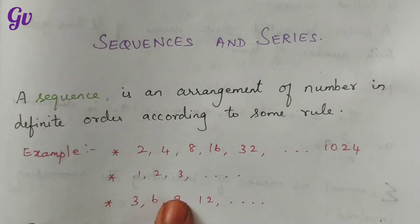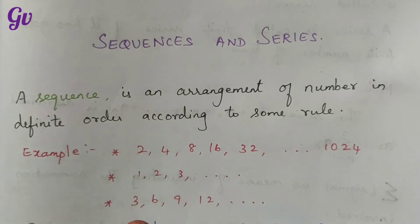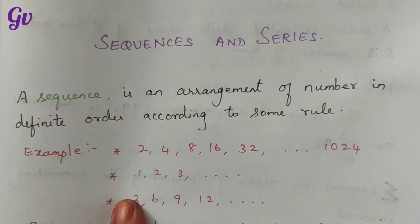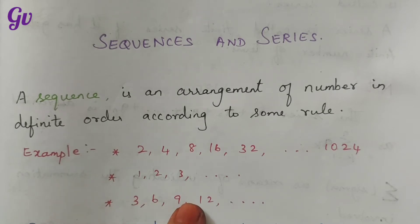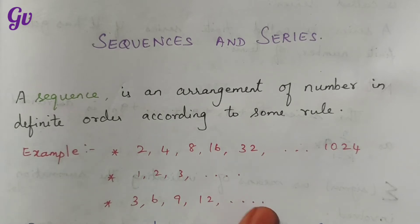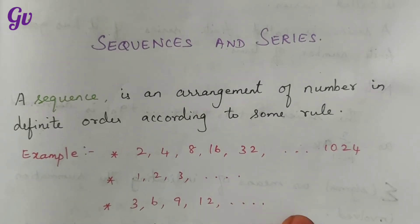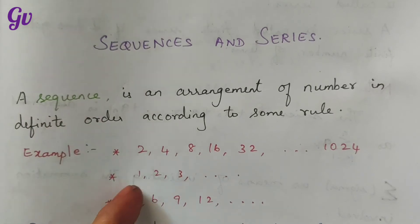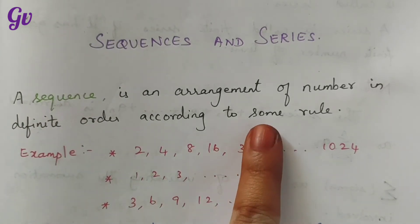Next, consider multiples of 3. We can generalize this as an equal to 3 times n. When n equals 1, we get 3; n equals 2 gives 3 times 2 equals 6; n equals 3 gives 9; n equals 4 gives 12, and so on. So we can generalize this with the formula an = 3n. That's the rule for a sequence — we can generalize it into one formula.